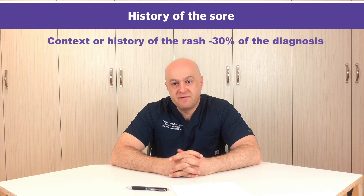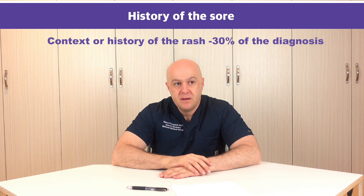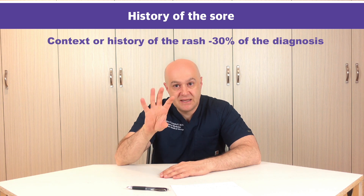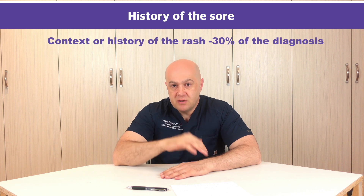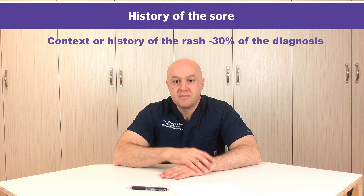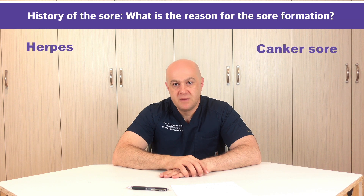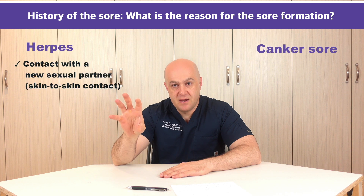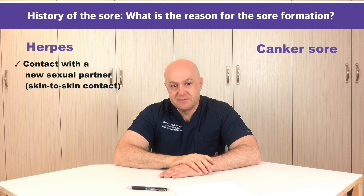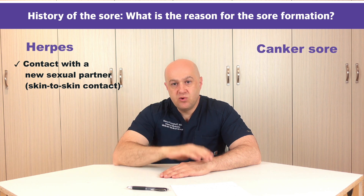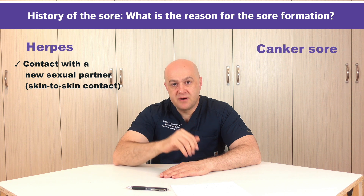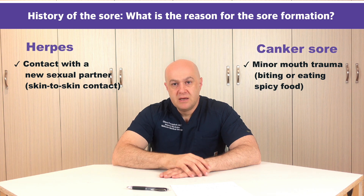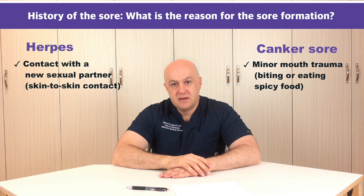Context or history of the sore accounts for 30% of the diagnosis and usually confirms the diagnosis, while the visual exam establishes it. The first part of the history is what's causing the sore. Herpes, unlike canker sore, is an infectious condition caused by the herpes virus and transmitted by skin-to-skin contact. Canker sore is usually caused by minor trauma — it can be a small bite or even eating spicy food. So one is caused by infection and the other by minor trauma.